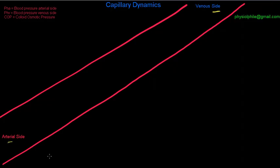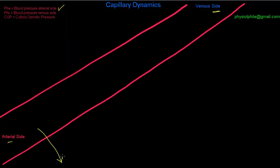We're going to be looking at the pressures that operate in the capillary. The first pressure we need to consider is the pressure generated by the force of contraction of the left ventricle — the blood pressure. The hydrostatic pressure on the arterial side is going to be pushing fluid out of the capillary into the tissue space.